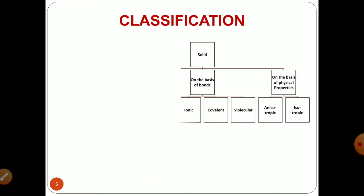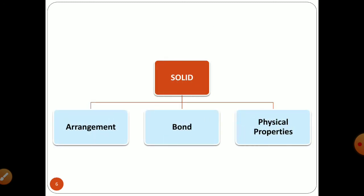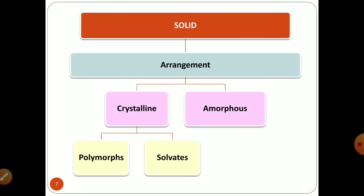Next we will discuss the classification of solids. Basically, solids are classified in three major classes which are again subdivided into different classes. The first classification is on the basis of arrangement, and based on the arrangement they are classified into two subclasses: crystalline arrangement and amorphous arrangement. The crystalline form is again subdivided into polymorphous and solvates.